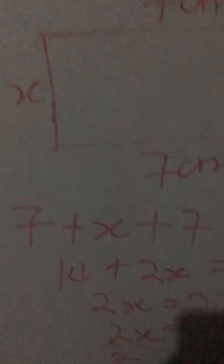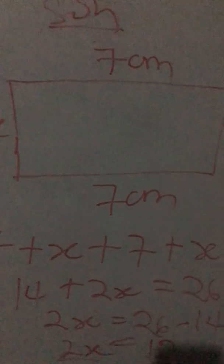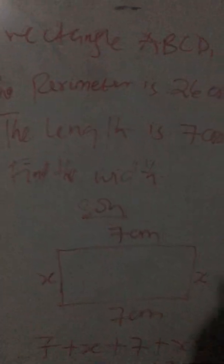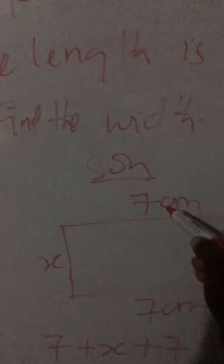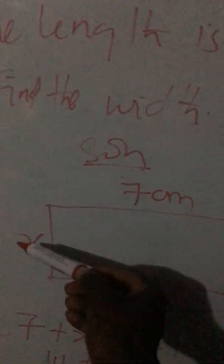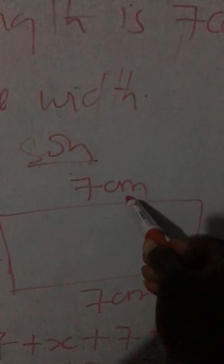So the width of the rectangle is 6 centimeters. Whatever question you are given with respect to the perimeter of a rectangle, you should be able to solve it — as long as you know that opposite sides are equal. If one side is seven, the opposite is seven; if one side is ten, the opposite is ten. To find the perimeter, you add everything around it.